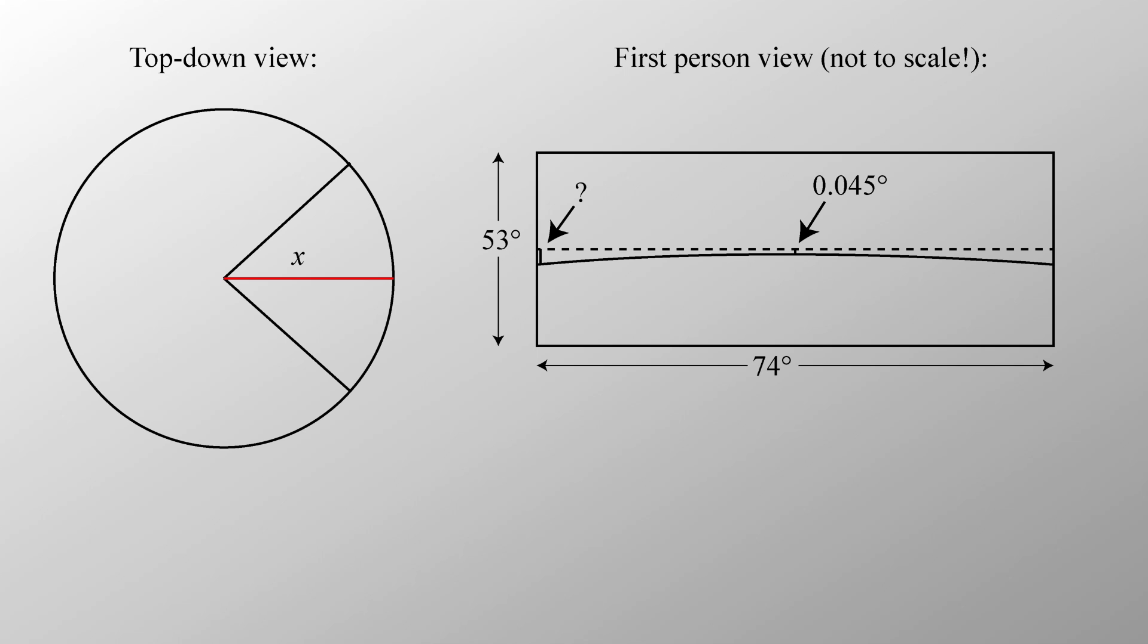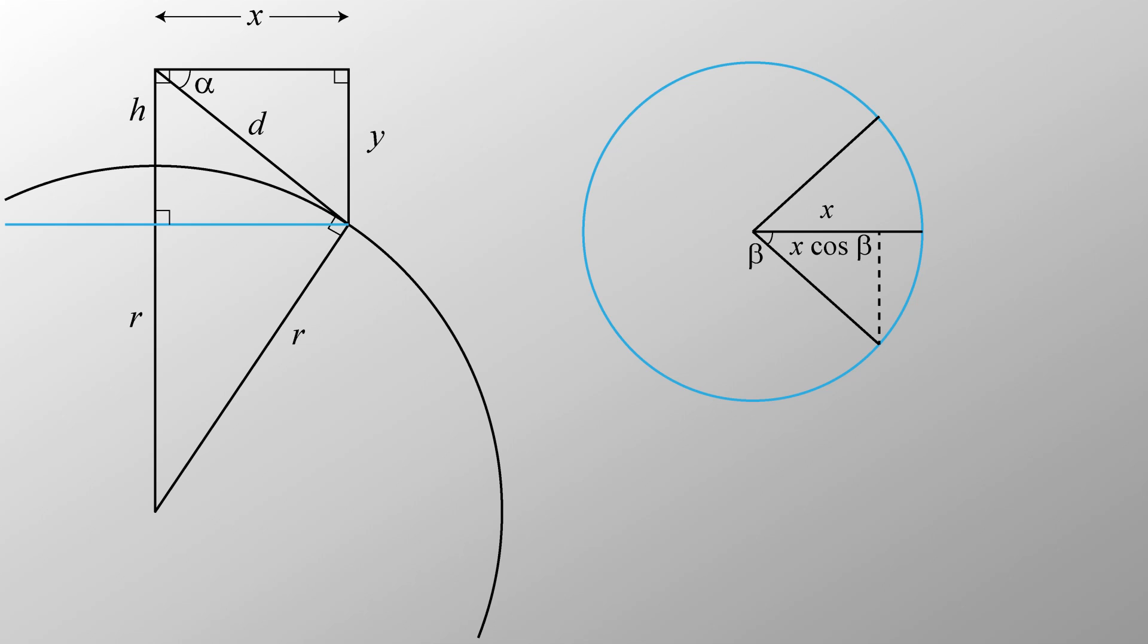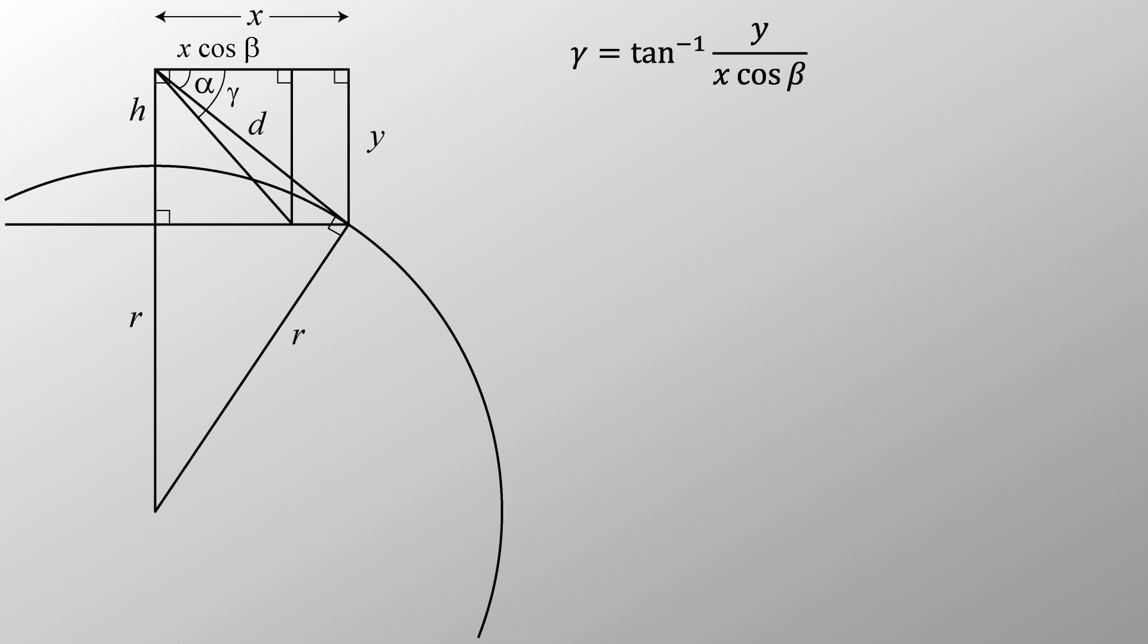Looking at it from above the observer, this is the distance we called x, the horizontal distance to the horizon in the first figure. That makes this distance x cosine beta, beta being half the field of view. Going back to the side view, we now draw a line segment parallel with y, x cosine beta from the observer. What we're looking for is this angle here, gamma, which is the tan inverse of y over x cosine beta.